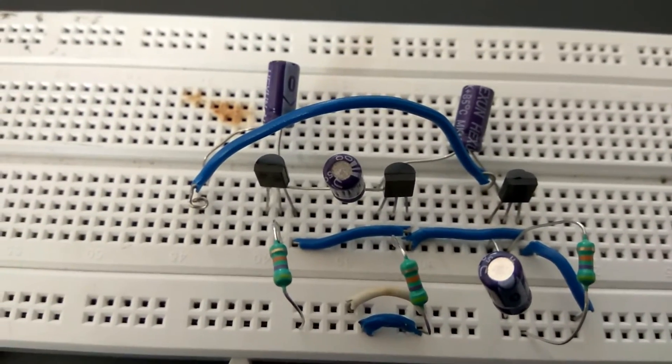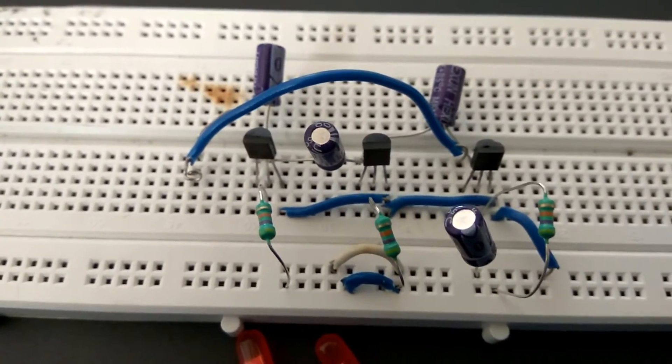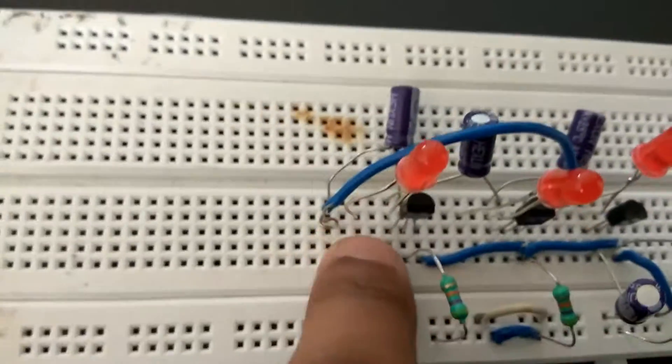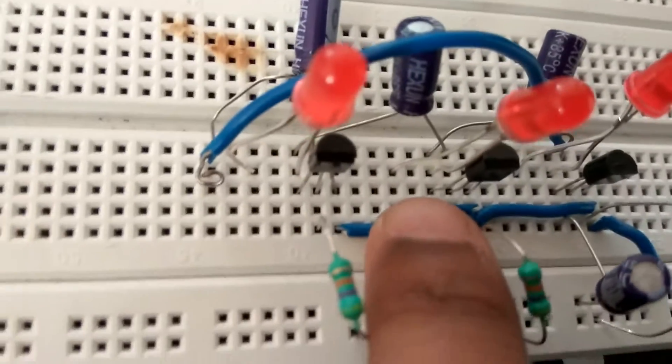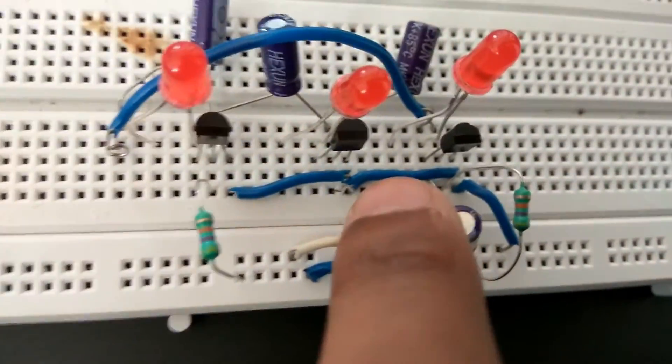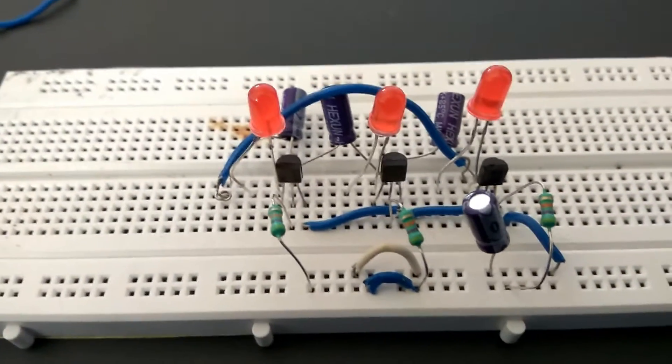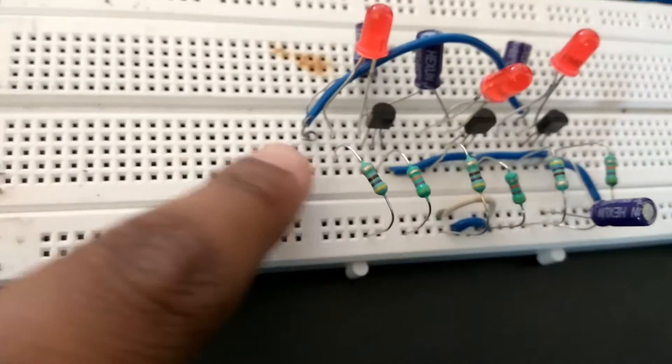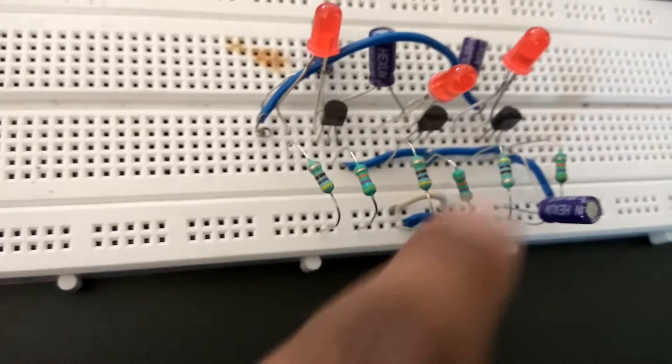Now comes the LED part. Connect the negative terminals of the LEDs to the collectors of their respective transistors. Each collector connects to an LED's negative terminal. Then connect the LEDs' positive terminals to the positive power supply using 470 ohm resistors. Do this for all three LEDs.